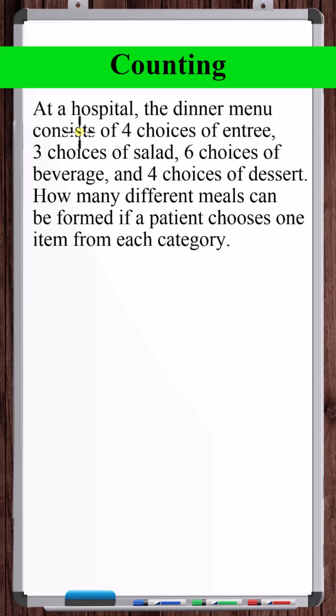At a hospital, the dinner menu consists of four choices of entree, three choices of salad, six choices of beverage, and four choices of dessert. How many different meals can be formed if a patient chooses one item from each category?